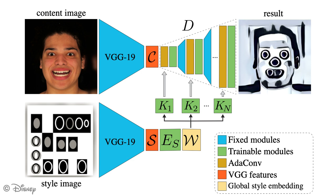To overcome this limitation of AdaIn, we generalize the renormalization step and propose AdaConv. AdaConv predicts entirely new convolutional kernels at test time, and therefore can better capture local style structure such as the shape of brush strokes, lines, and other local image elements. As a first step, AdaConv predicts new depthwise separable convolutional kernels from an input style descriptor.